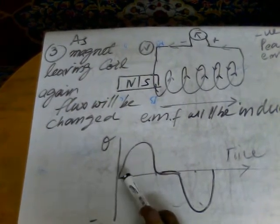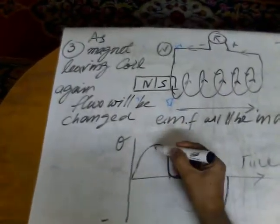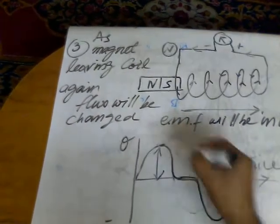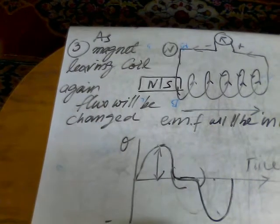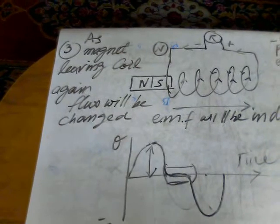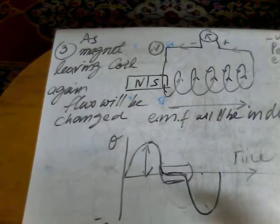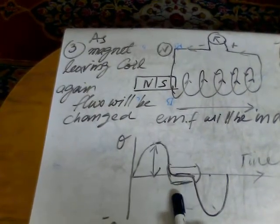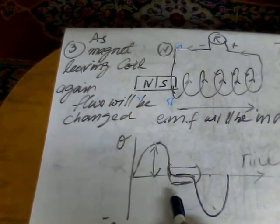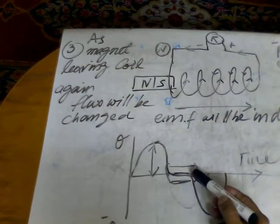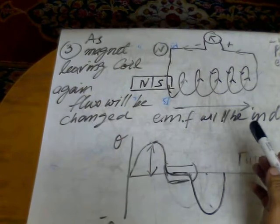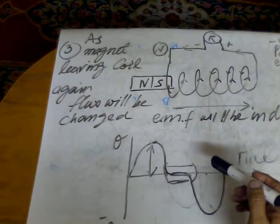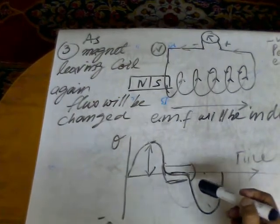While the magnet was outside, there was zero EMF. While it started moving toward the coil or solenoid, the peak EMF was produced. While it was moving inside, this area of the graph represents constant electromagnetic flux. Therefore, due to the constant flux with no change, no EMF was induced. From this point onward — the third figure — the magnet is again leaving the coil or solenoid, and so the electromagnetic flux will change again.